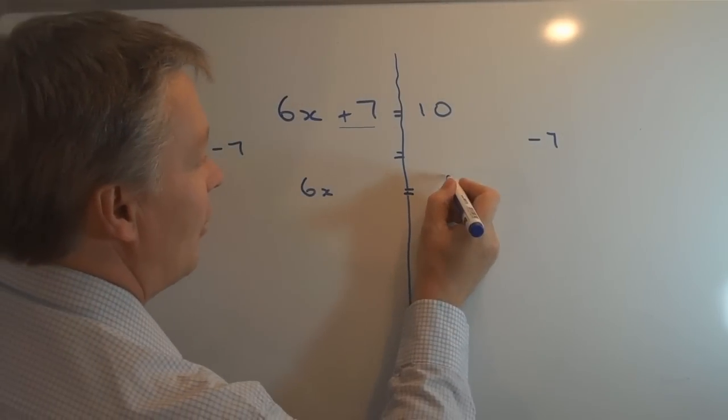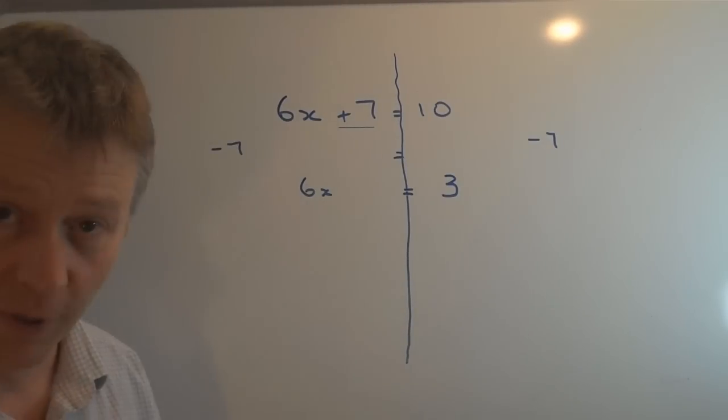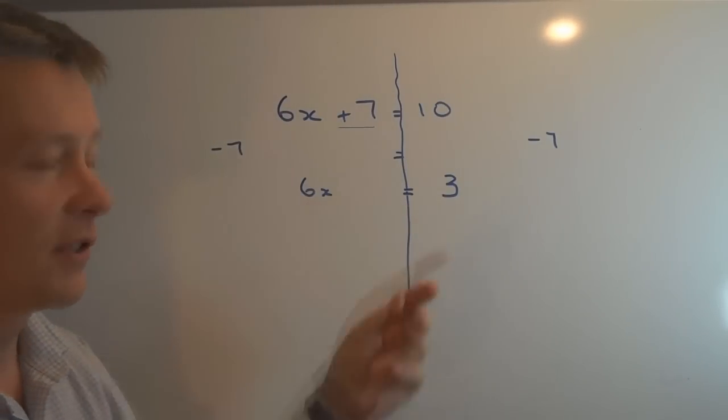On this side I have 10 take away 7 which is 3. So now my equation has been simplified to 6x = 3.